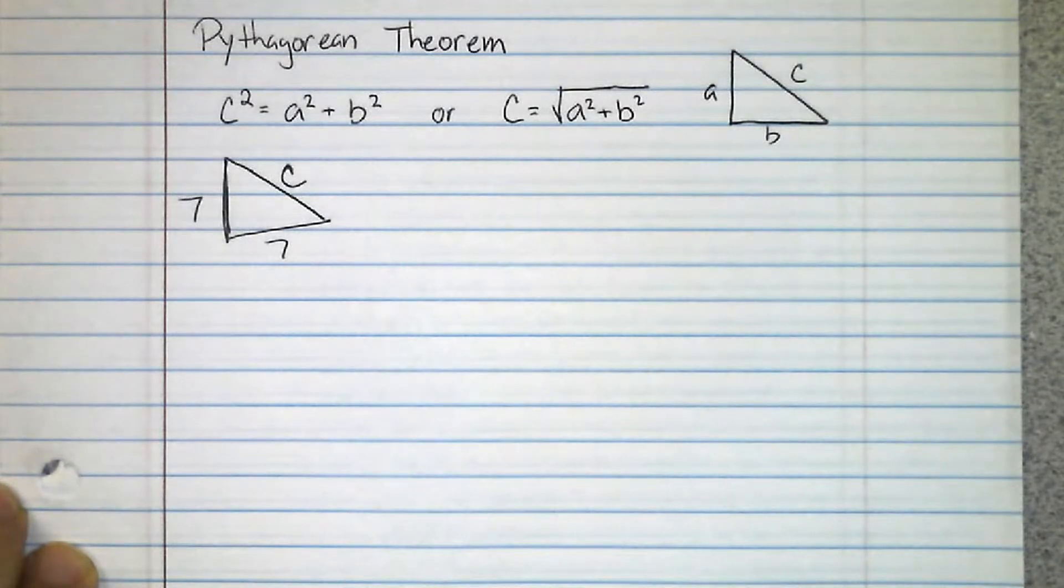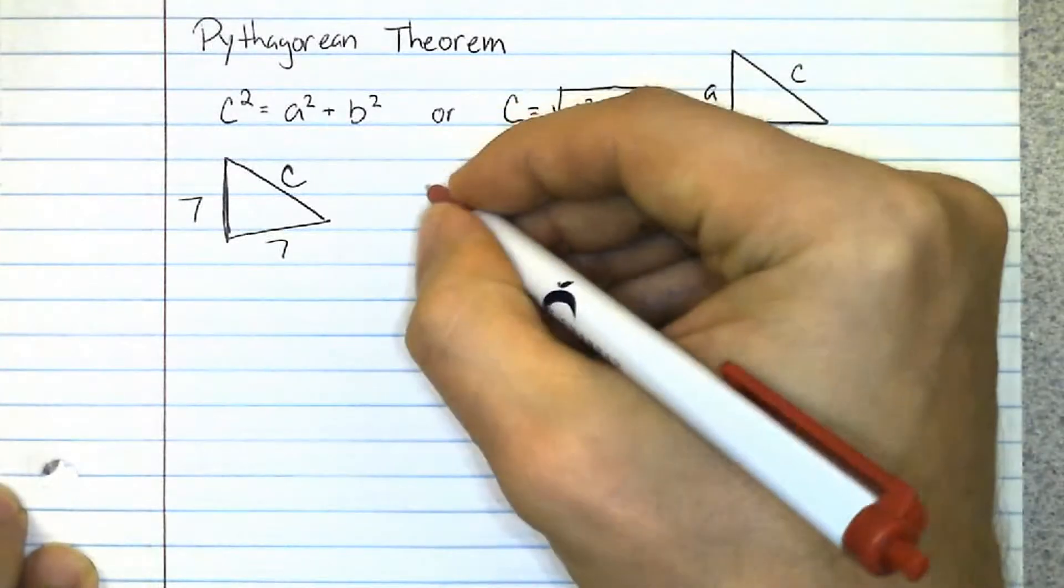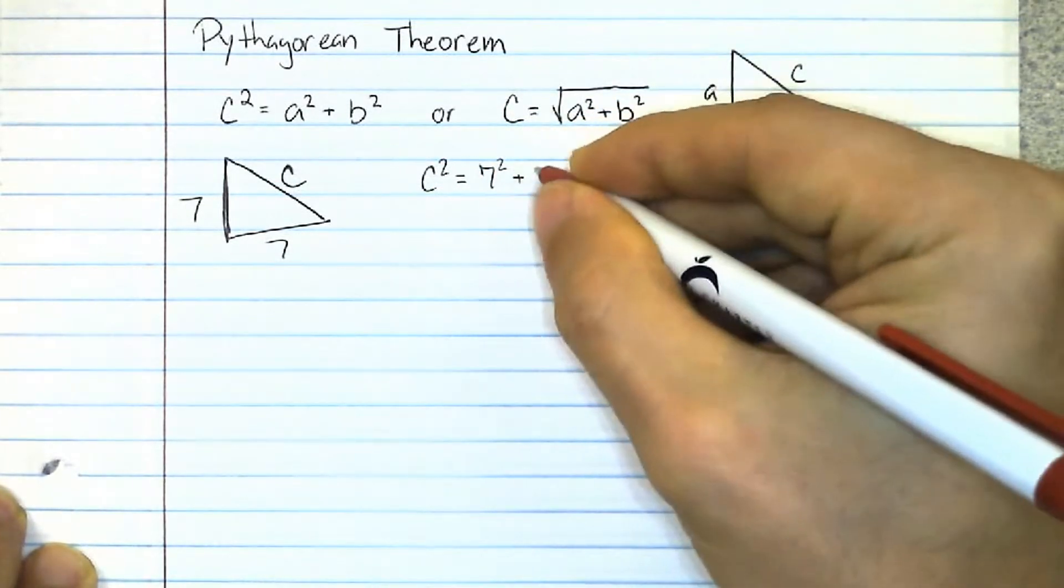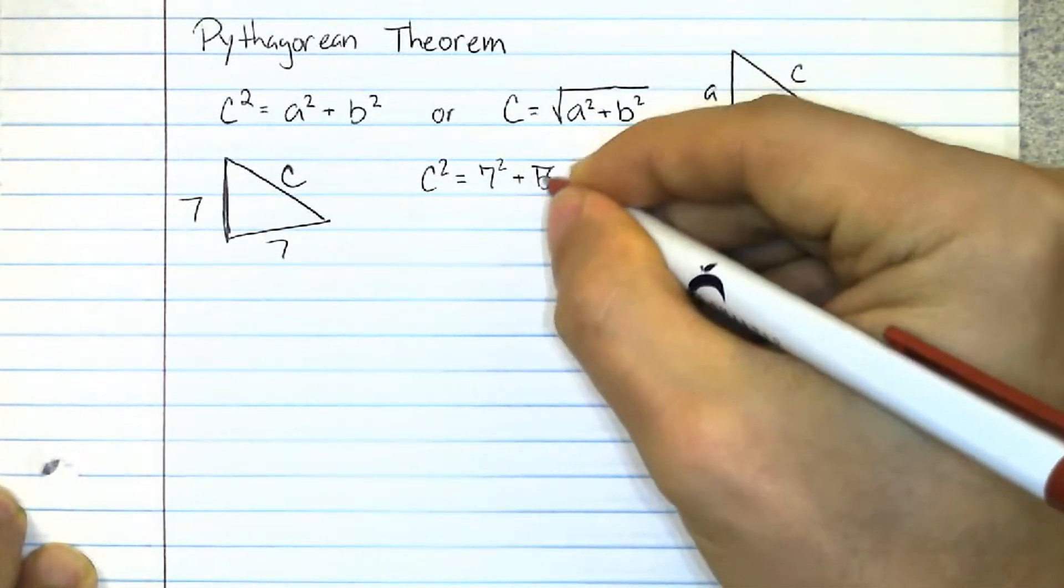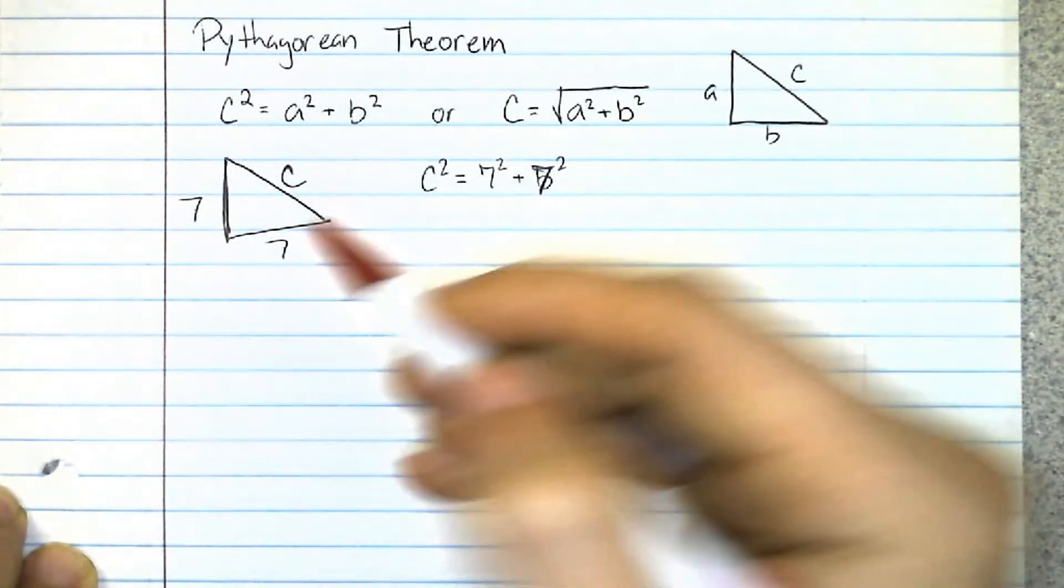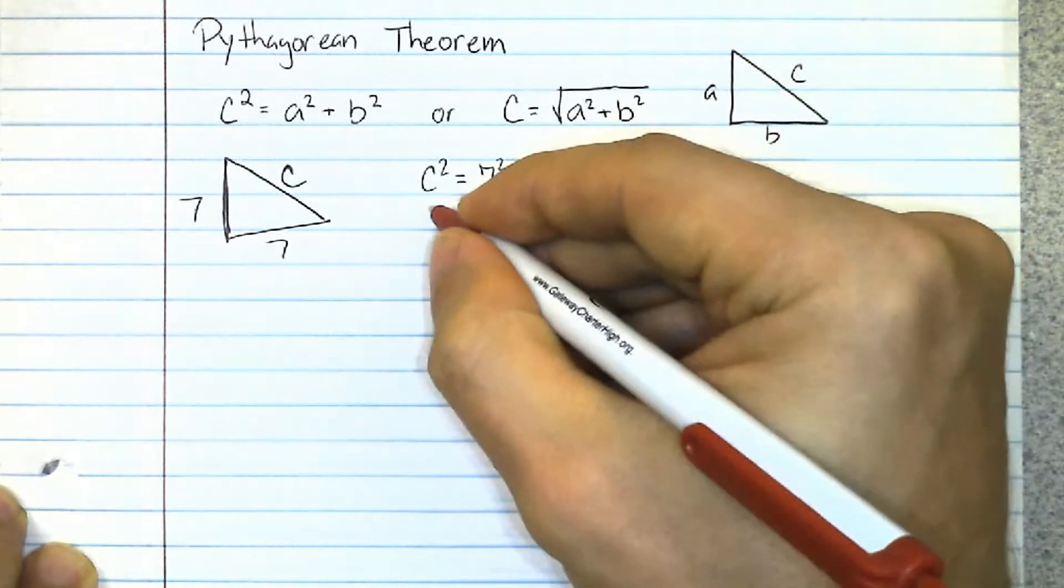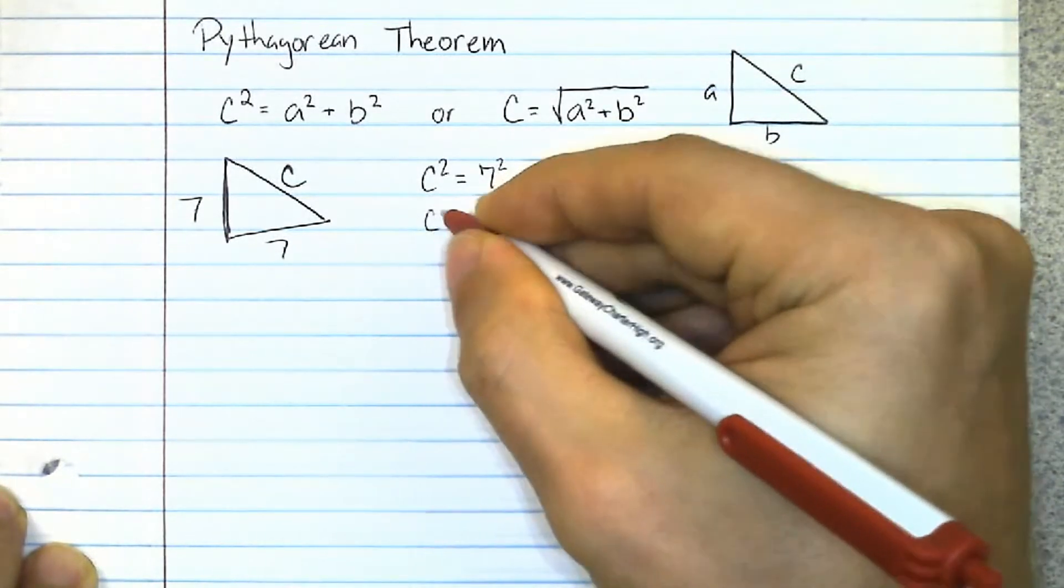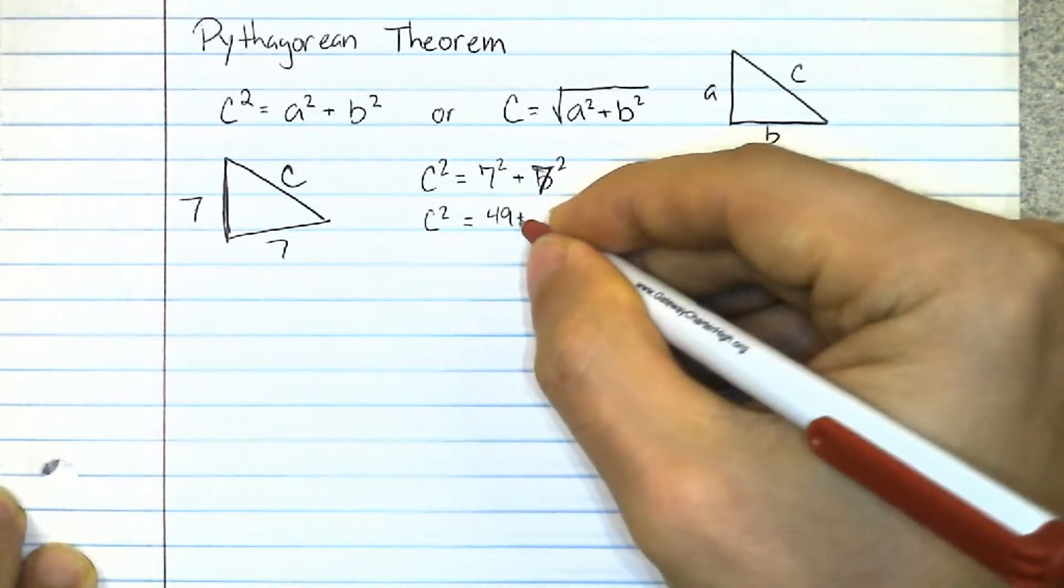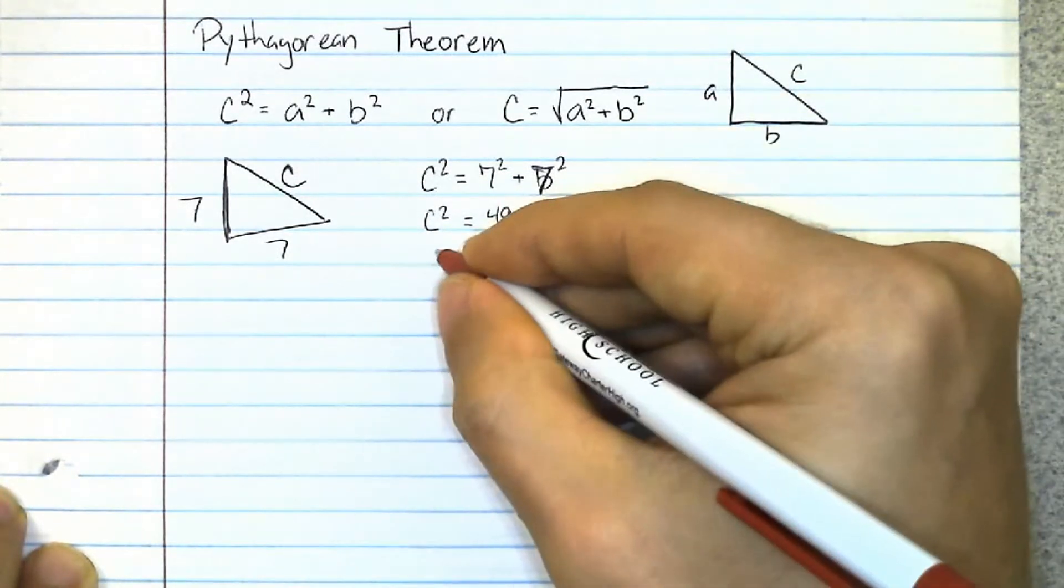So let's say we have this problem right here. We know c squared is going to equal a squared plus b squared. So there's my a and b - it doesn't matter which one's which. 7 squared is going to be 49, so I have c squared equals 49 plus 49, which would be 98.